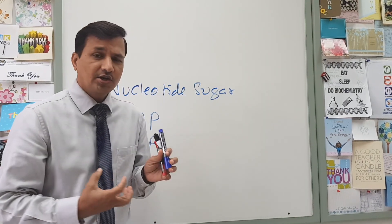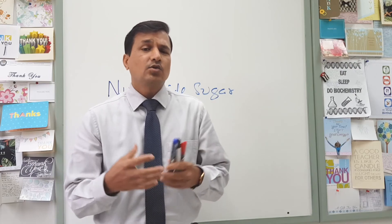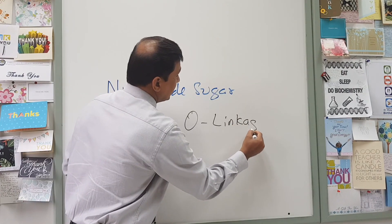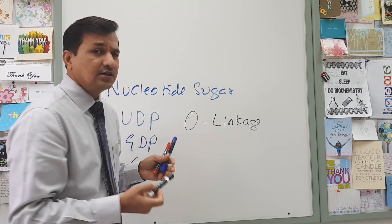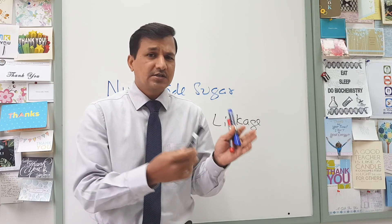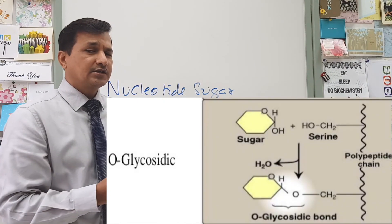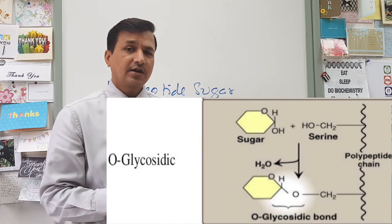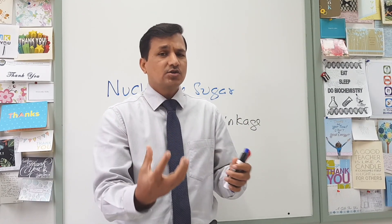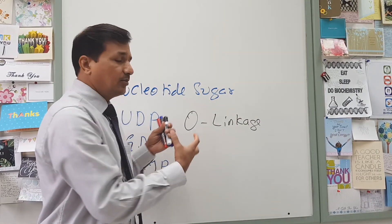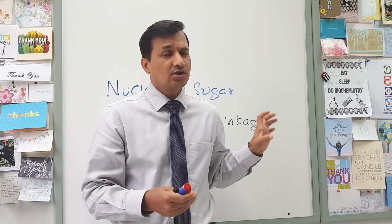Depending on where exactly the sugar units are added, we can have two types of linkages in a glycoprotein molecule: O-linkages and N-linkages. In O-linked glycoproteins, the amino acid accepting the carbohydrate is either serine, threonine, or tyrosine — these are hydroxyl-containing amino acids. They accept the carbohydrate onto a protein molecule, creating O-linkages. The O-linked sugars are added one after the other in a sequential addition, coming in as nucleotide sugars like UDP glucose and UDP galactose, added by specific glycosyltransferases.